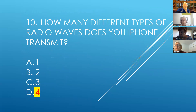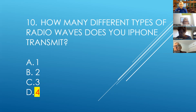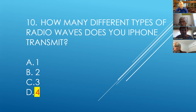Question ten — there are four different types of radio waves. One allows you to connect to cell phone towers. One allows you to connect to Wi-Fi, the local network around your house. One is Bluetooth, which connects to your car radio system. And one is NFC — Near Field Communication — which lets you hold your phone over a pay station at McDonald's, Starbucks, or a grocery store to pay your bill.